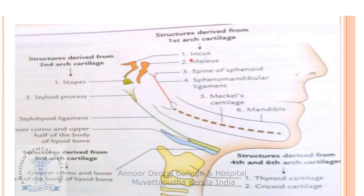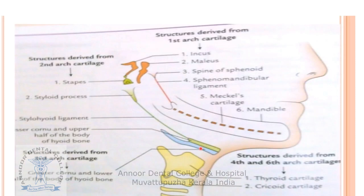To summarize the skeletal derivatives: First arch — incus, malleus, sphenomandibular ligament, Meckel's cartilage, mandible. Second arch — stapes, stylohyoid ligament, lesser cornu, upper part of body of hyoid. Third arch — lower part of body of hyoid and greater cornu. Fourth and sixth arches — thyroid cartilages and other laryngeal cartilages.